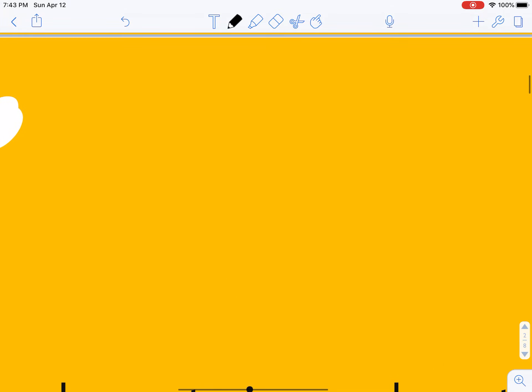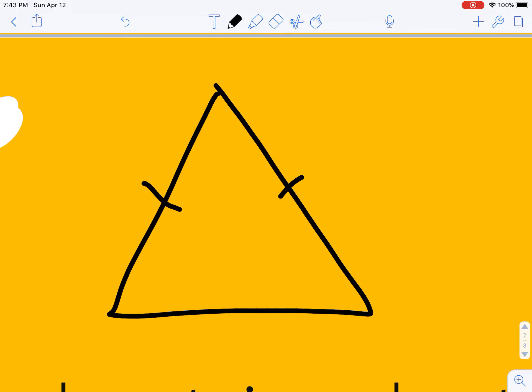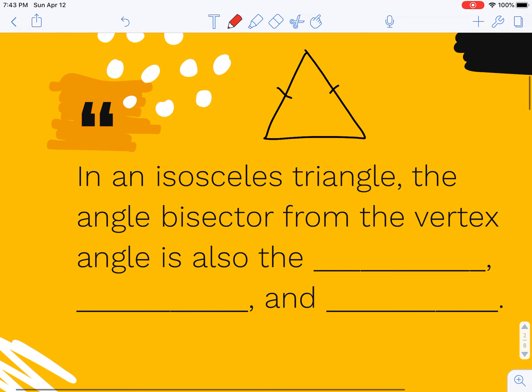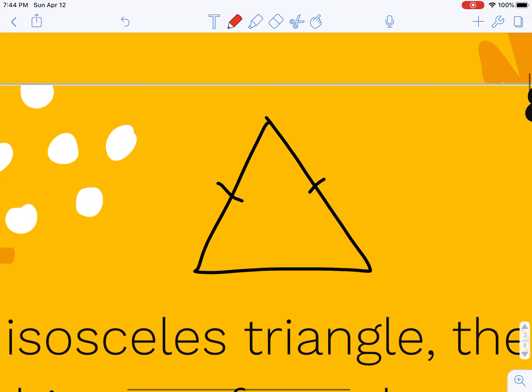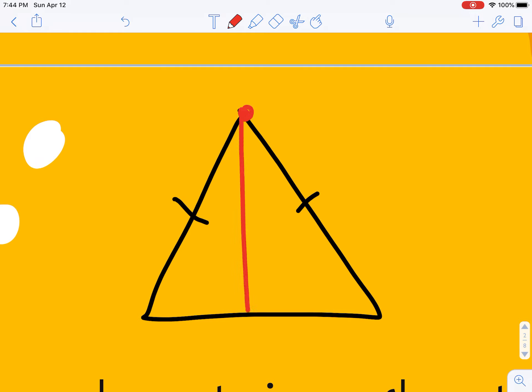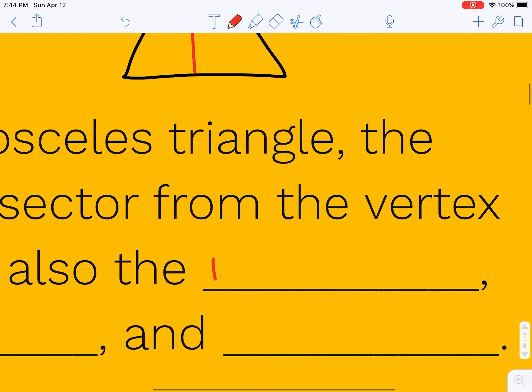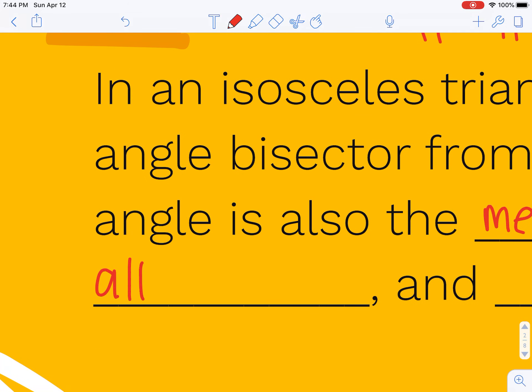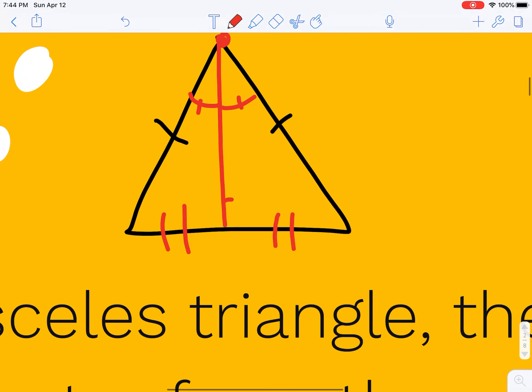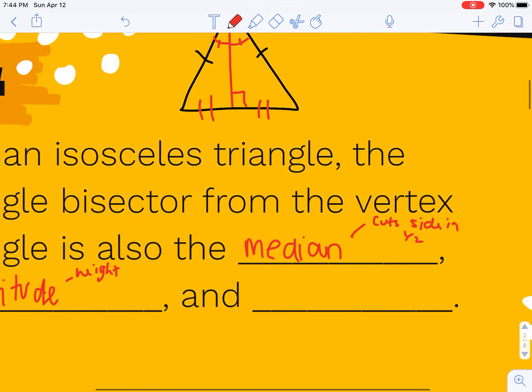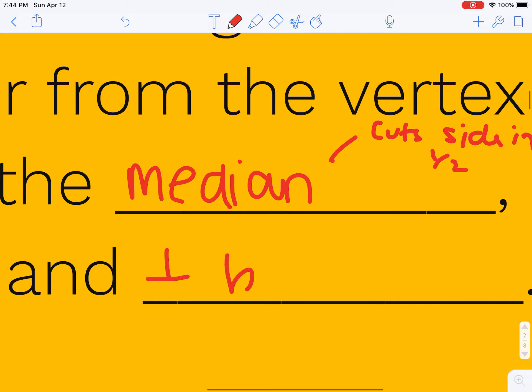If you have an isosceles triangle, the angle bisector from the vertex angle is also the median, which means it cuts the side in half. It'll be the altitude, which sometimes we call height, and that makes a 90 degree angle. And because it makes a 90 degree angle and cuts that side in half, it's also the perpendicular bisector. Friendly reminder, that symbol means perpendicular. There's no symbol for bisector.